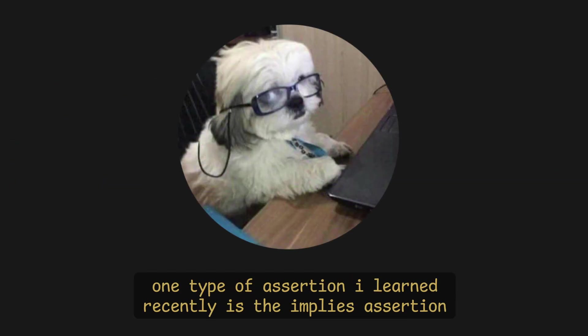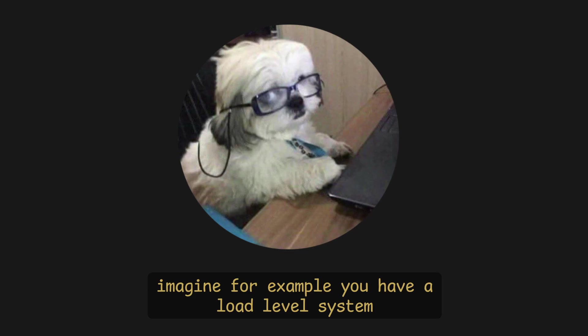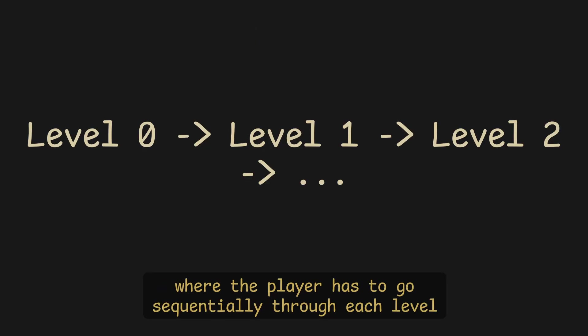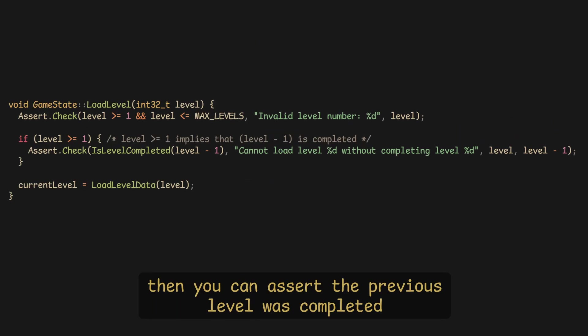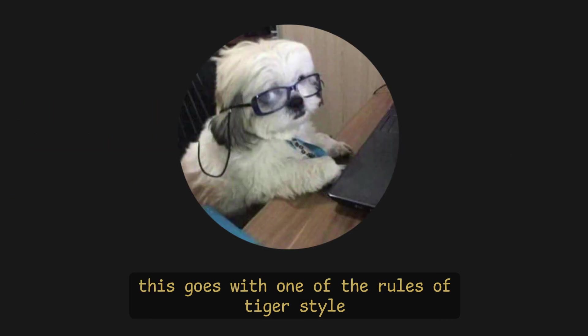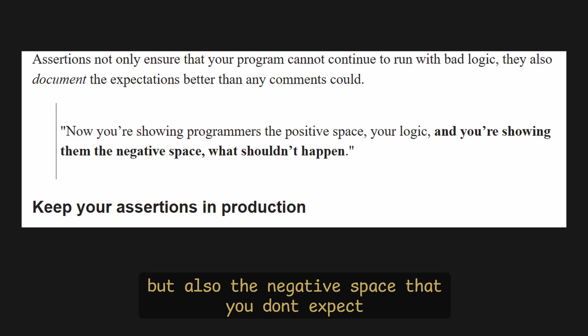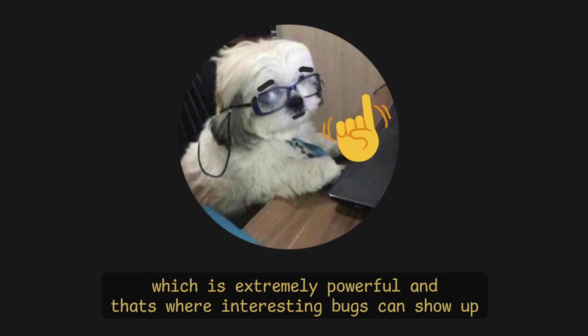One type of assertion I learned recently is the implies assertion. Imagine you have a load-level system where the player has to go sequentially through each level. You can assert the previous level was completed: if level is greater than or equal to one, assert that level minus one is completed. This follows one of the rules of Tiger Style — not just assert what should happen, but also the negative space you don't expect, which is extremely powerful and where interesting bugs can show up.